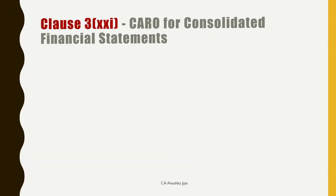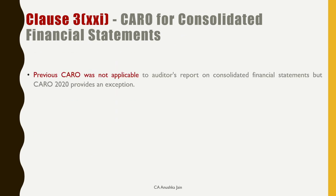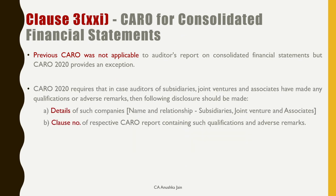Final new clause is 21. CARO 2020 does not apply to the auditor's report on consolidated financial statements except for this clause. For example, if I am the auditor of the parent company and subsidiary companies are being audited by other auditors, if those auditors have given qualified remarks in their CARO, ush extract ko hume yahan put karna hoga. So CFS ka auditor's report dete waqt, sirf ek clause hoga — yani clause 21. This brings us to the end of the video.